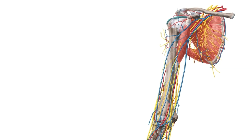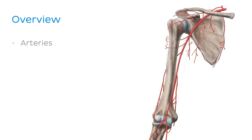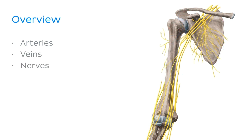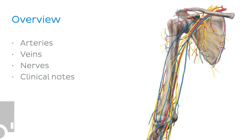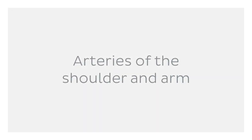Before we begin, I'd like to give you a quick overview of what we're going to talk about in this tutorial. In our image here, the musculature has been dissected away so that we can see the bones of the shoulder joint and the surrounding neurovasculature from an anterior perspective. This illustration will feature heavily throughout our tutorial as we discuss the arteries, the veins and nerves of the shoulder and the arm. And finally, we'll conclude our tutorial with some clinical notes. Without further ado, let's get started with the arteries of the shoulder and the arm.